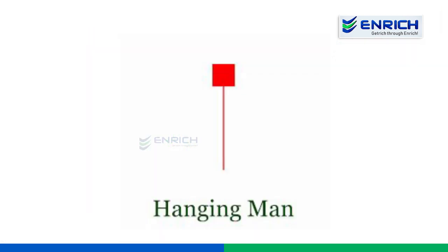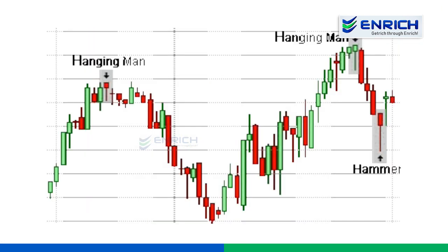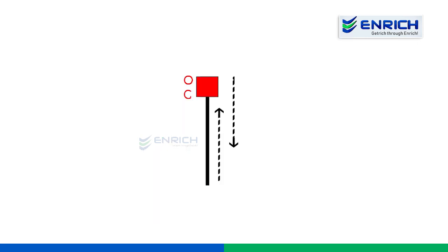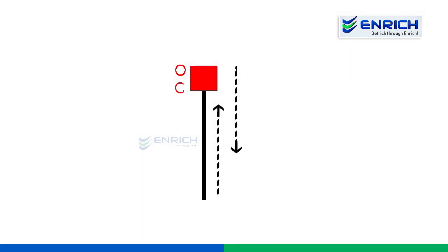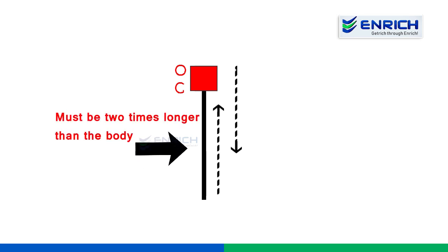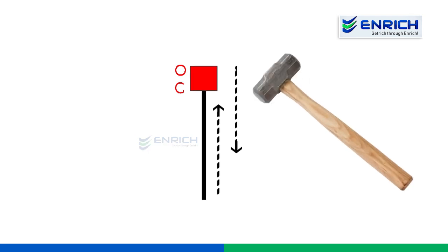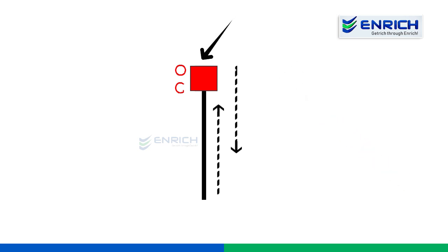Let's move on to hanging man. Hanging man is a bearish reversal pattern — you can guess the trend by the name, as a hanging man is obviously a negative indication. The body can either be red or green. The shadow of this candle appears below the body and is at least two times the size of the real body of the candle. This candle resembles a hammer, and like the hammer, usually there's no shadow above the body of the candle, but sometimes you may find a small shadow.